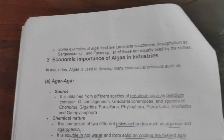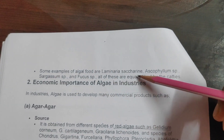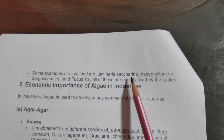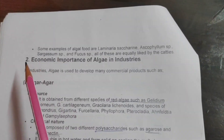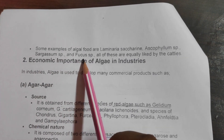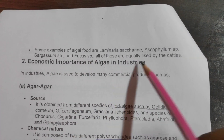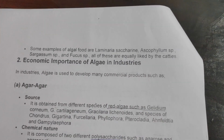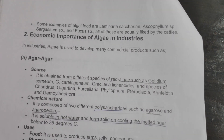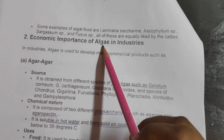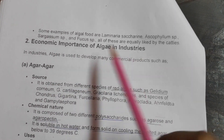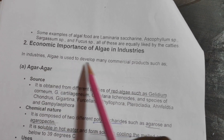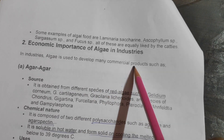Some examples of algae used as animal food include Laminaria saccharina, Ascophyllum species, Sargassum species, and Fucus species — all of which are liked by cattle.